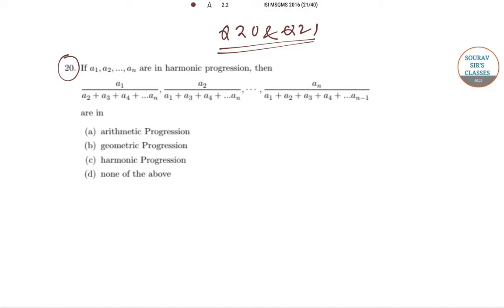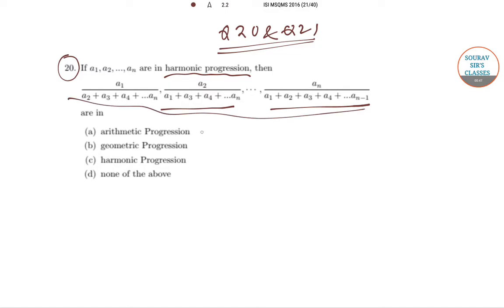In question number 20, it is given that if a₁, a₂, up till aₙ are in harmonic progression (HP), then the series a₁/(a₂+a₃+...+aₙ), a₂/(a₁+a₃+a₄+...+aₙ), going on till aₙ/(a₁+a₂+a₃+...+aₙ₋₁) — we need to determine whether this series is an arithmetic progression, geometric progression, harmonic progression, or none of the above.